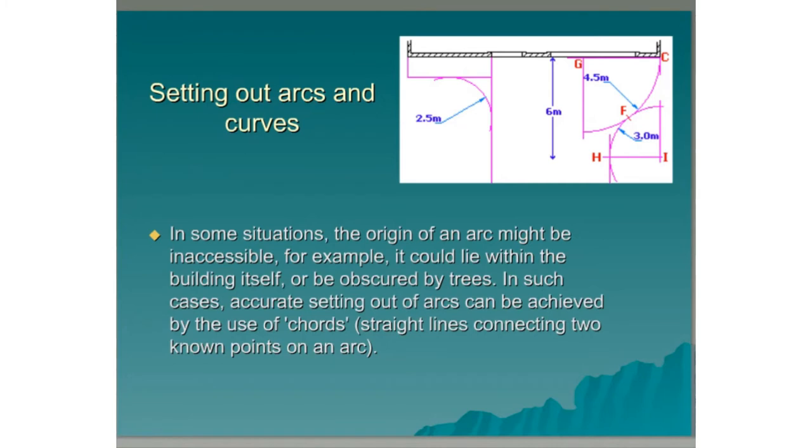In some situations the origin of an arc might be inaccessible, for example it could lie within the building itself or be obscured by trees. In such cases accurate setting out of arcs can be achieved by using cords. These are straight lines connecting two known points on an arc.